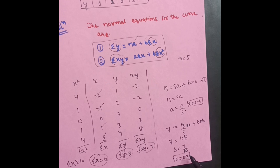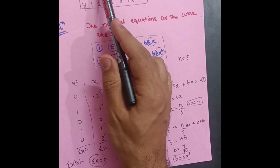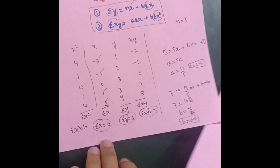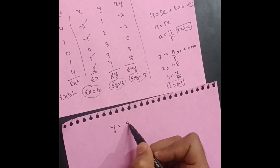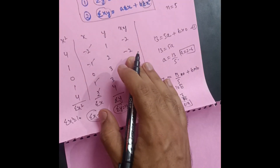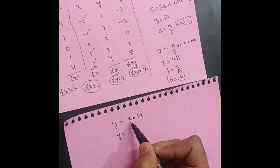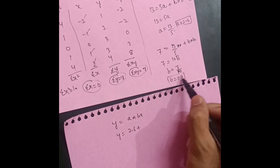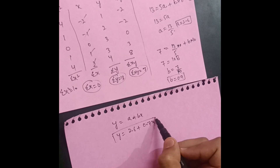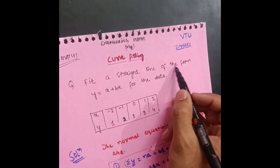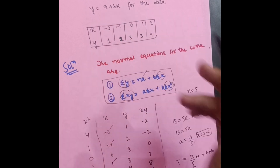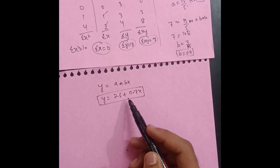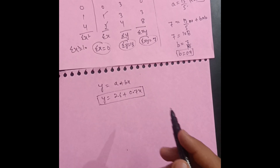We have a = 2.6 and b = 0.7. Putting these values into the straight line equation y = a + bx gives the final answer: y = 2.6 + 0.7x. This is the answer to the question of fitting a straight line y = a + bx to the given data. It is a seven-mark question as far as the exam is concerned.